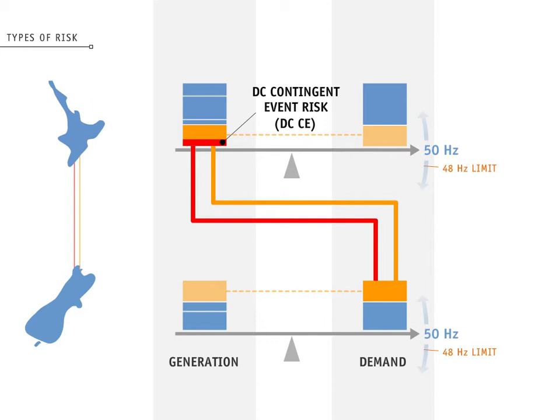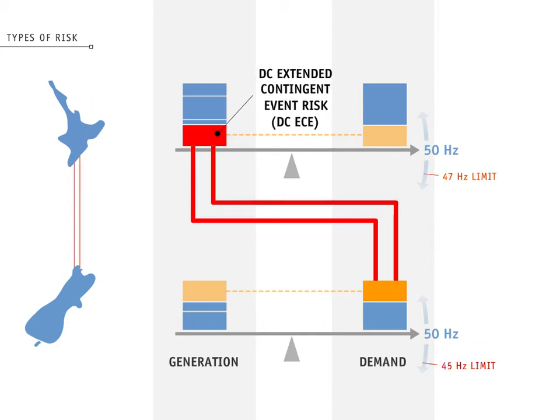The DC-CE risk is calculated as the total HVDC megawatts received, minus the lower overload capability of the two poles. A DC extended contingent event, or DC-ECE, is defined as losing the total megawatts received over the HVDC link. If a DC-ECE happens, the loss of the HVDC link will sever transmission between the North and South Islands.